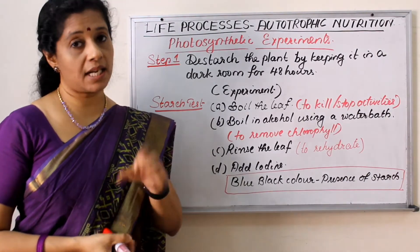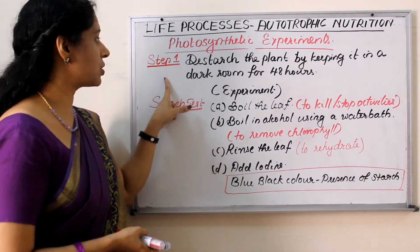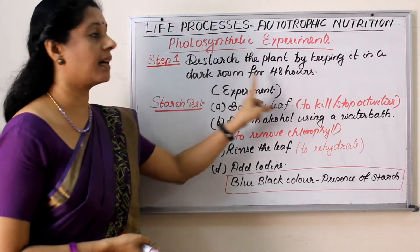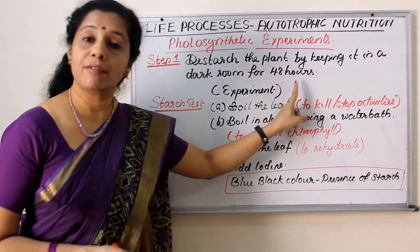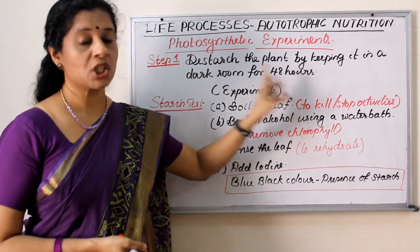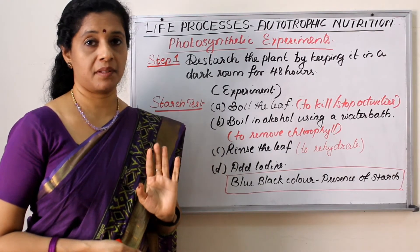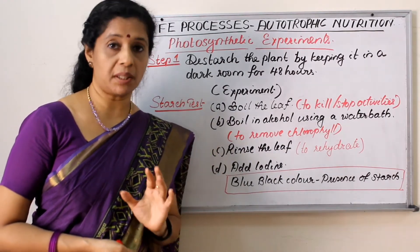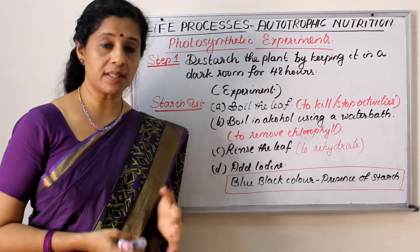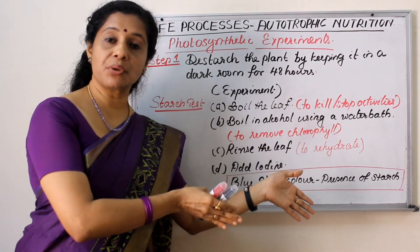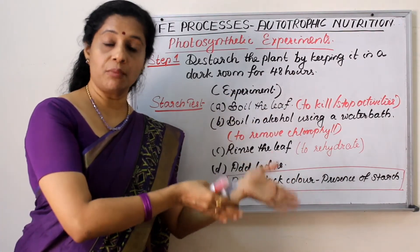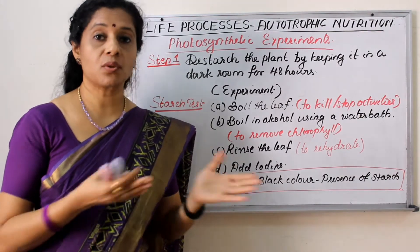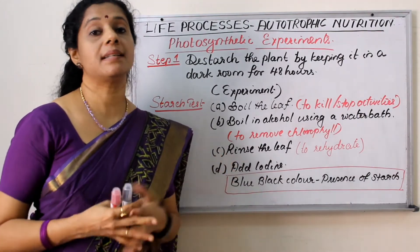The first stage in any photosynthetic experiment should be de-starching the plant by keeping it in a dark room for 48 hours — that is a compulsory step. Most of the experiments use potted plants because we have to transfer the plant to the dark room and then back to normal conditions, so potted plants make movement easy.